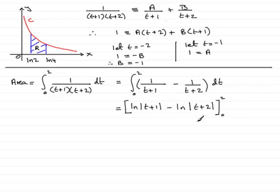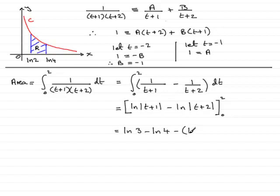Substituting the upper limit t = 2: we get ln|2+1| = ln 3 (no modulus needed, it's positive) minus ln(2+2) = ln 4. Then substituting the lower limit t = 0 and subtracting: we get ln(1) − ln(2). Since ln(1) = 0, we can ignore that term, leaving minus ln 2.